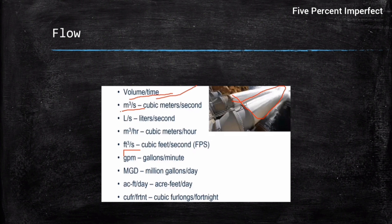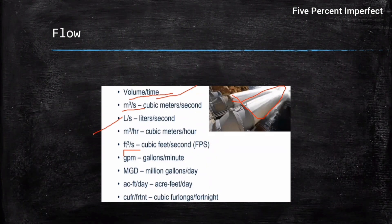When calculating flows in cubic meters per second, the quantity can be very large and general flows come in terms of 0.001 cubic meters per second, which becomes clumsy. Therefore in general practice we use the liter per second concept, or sometimes in the Indian context we also use the MLD concept — that is the easiest way to represent flow.